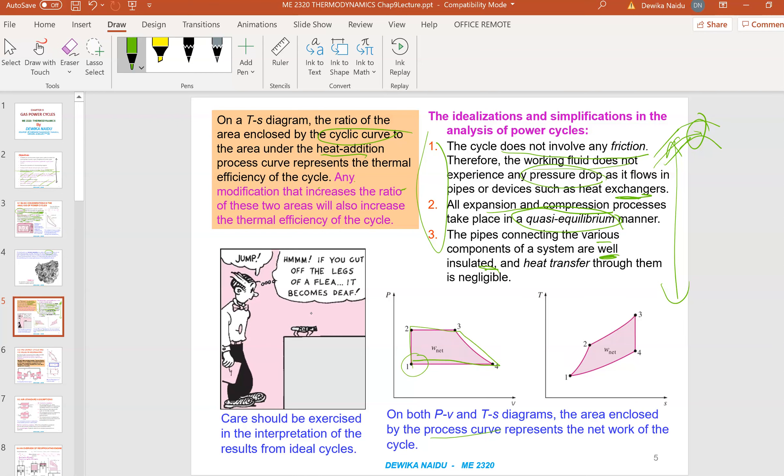Let me just explain to you on the PV and the TS diagram of the enclosed process. This process is actually a cycle. That is the reason why it goes to 1, 2, 3, 4 and back to 1. This is the PV graph and this would be the TS graph. And these are actually the Carnot cycle, example of a Carnot cycle.